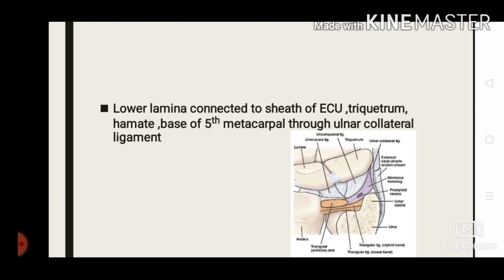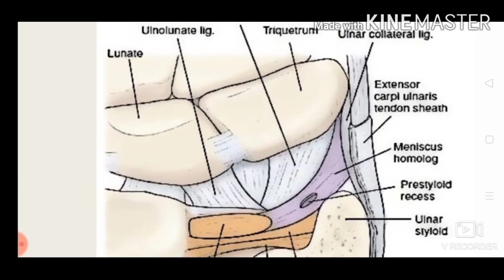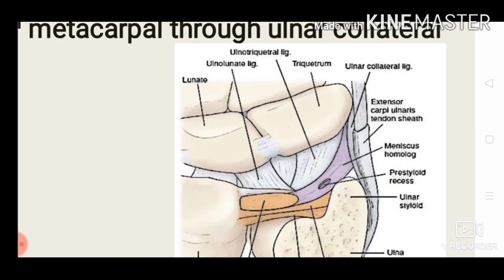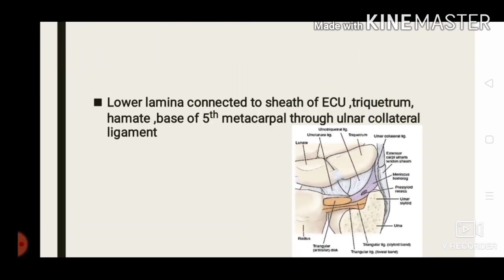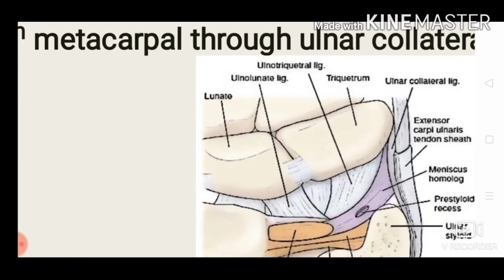The lower lamina is connected to the sheath of the extensor carpi ulnaris tendon, triquetrum, hamate, and base of the fifth metacarpal through the ulnar collateral ligament. Within the lower lamina there is an irregular connective tissue called the meniscus homolog, which traverses volarly and ulnarly from the dorsal radius to insert on the triquetrum.